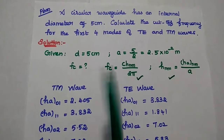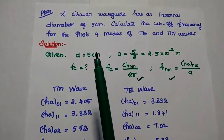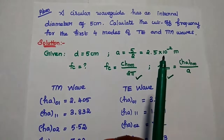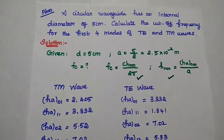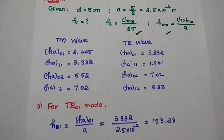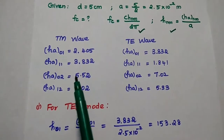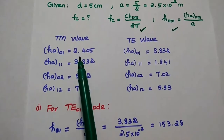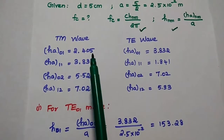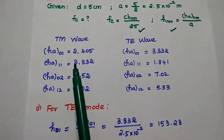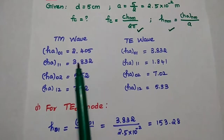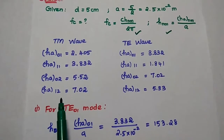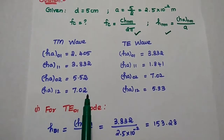We are going to find out the cutoff frequencies for the first 4 modes of TE and TM waves. For these waves, we have to remember the H'_nm values. For TM01, its value is 2.405. For TM11, its value is 3.832. For TM02, its value is 5.52. For TM12, its value is 7.02.